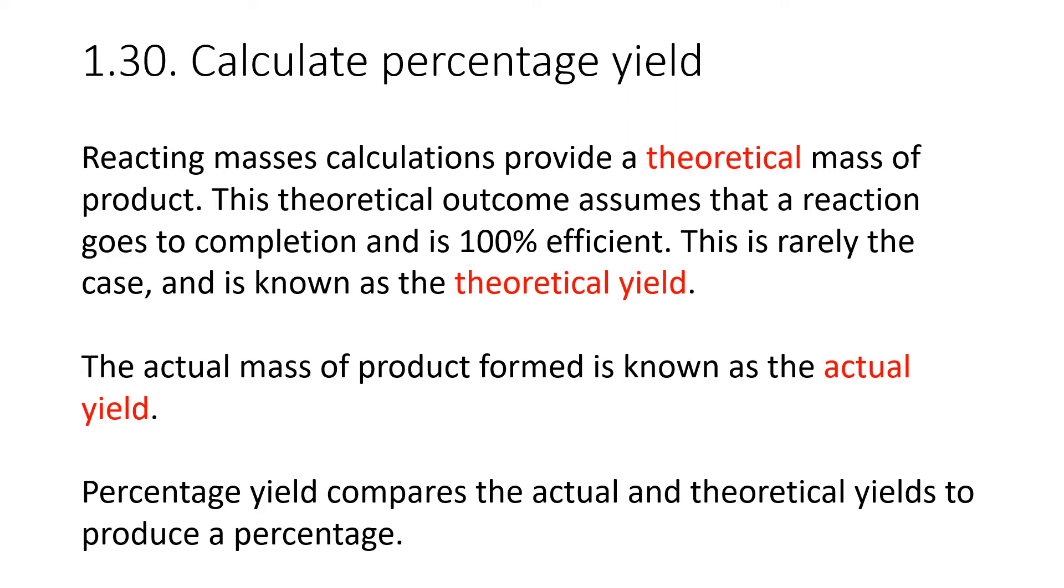For 1.30, we're looking at how to calculate percentage yield. The reacting masses calculations that we did in the previous video provide a theoretical mass of the product. This theoretical outcome assumes that a reaction goes to completion and is 100% efficient.